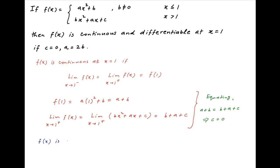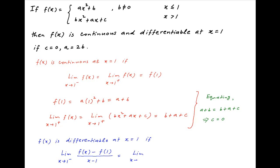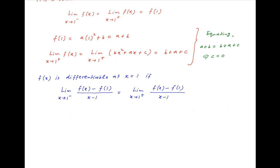f(x) is differentiable at x equal to 1 when the limit as x tends to 1 from the negative side of [f(x) minus f(1)] divided by (x minus 1) equals the limit from the positive side of the same expression. On the left-hand side, x is less than 1, so f(x) equals ax squared plus b, and f(1) equals a plus b, giving the numerator ax squared plus b minus (a plus b) over (x minus 1).